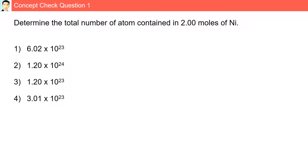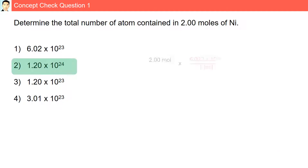Concept check Question 1. Determine the total number of atoms contained in 2 moles of nickel. We have 2 moles multiplied by the conversion factor 6.022×10²³ over 1 mole. Multiplying 6.022×10²³ by 2 gives us 1.2×10²⁴. That is choice number 2.